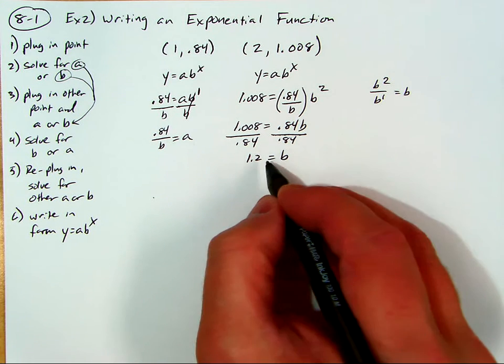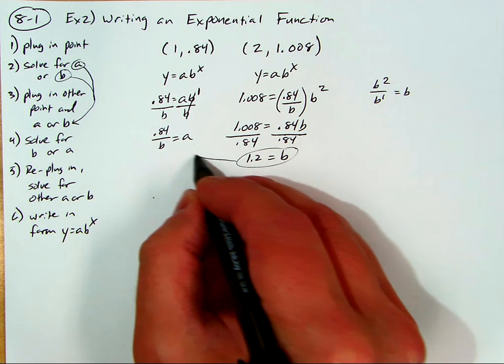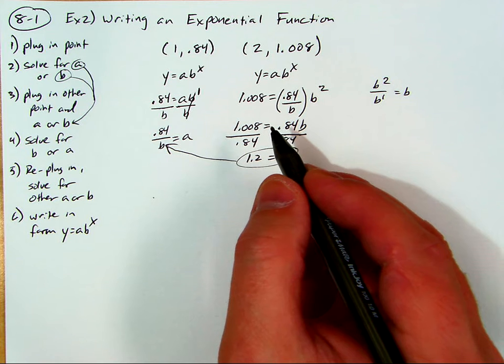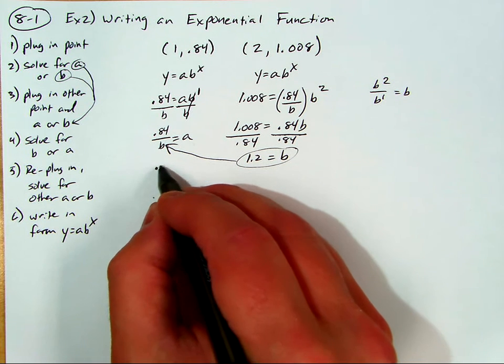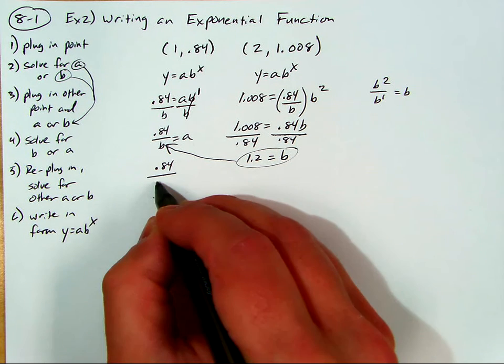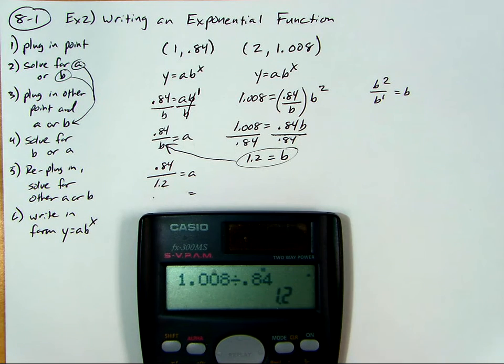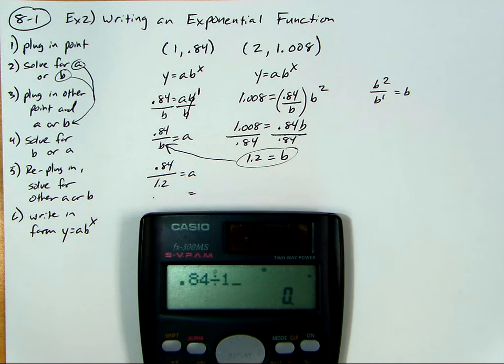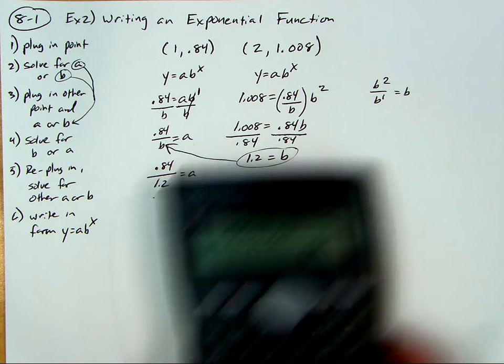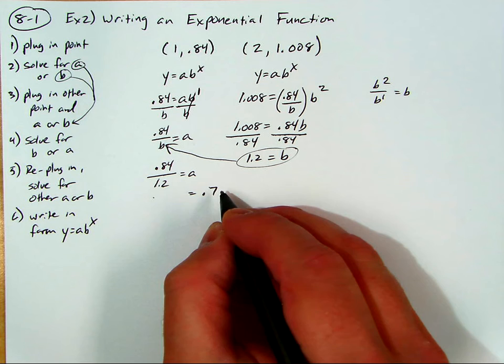So we're almost there. Now we just take this number and plug it back in where we solve for the other variable and solve. So 0.84 divided by 1.2 is going to be a. And that's going to be, I can just leave 1.2. No, I can't. So 0.84 divided by 1.2, 0.7. So it looks like a is 0.7.